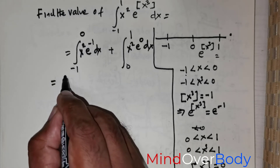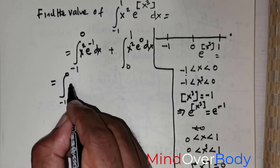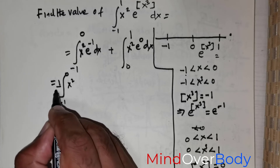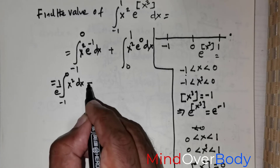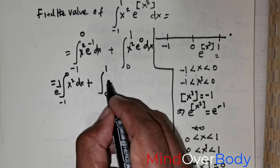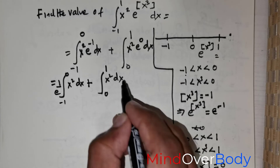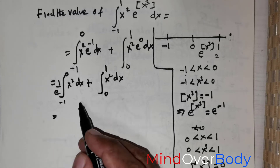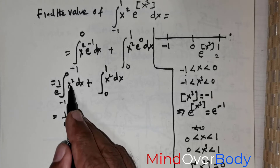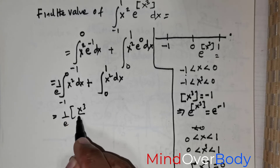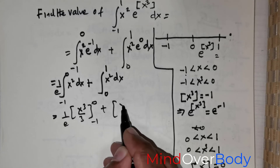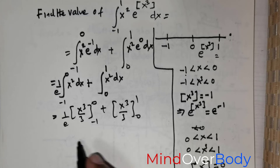Rewriting the full expression: the integral from negative 1 to 0 of x squared times e to the negative 1 — which is the constant 1 over e — dx, plus the integral from 0 to 1 of x squared dx. Integrating x squared gives x cubed over 3. The limits are negative 1 to 0 for the first part and 0 to 1 for the second.